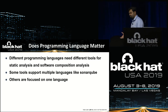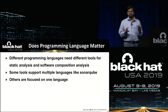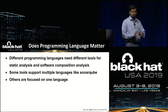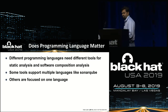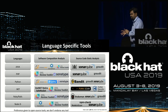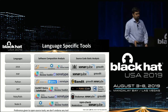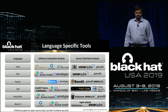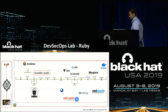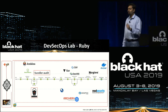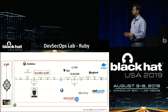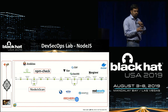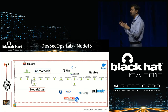Does programming language matter? Depending on the language, the only things that change are your tool choices for software composition analysis and static analysis. Different languages have different tool sets available. I've intentionally avoided any paid products — preference is given to open source. These are reference implementations where, based on the language in use — Ruby, PHP, Python, NodeJS — different tools are chosen for those two components, while the rest of the pipeline remains the same.